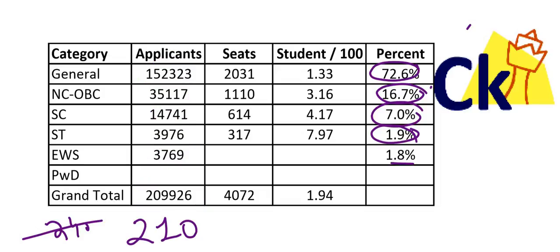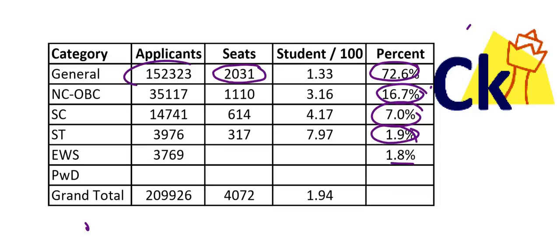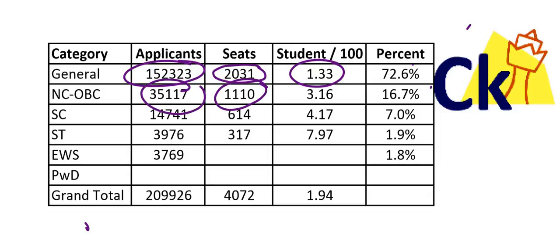This is where the main inequality comes. General category seats are 2,000 for 1,50,000 people, so the conversion ratio or seats per hundred students is only 1.33. OBC has almost 1,100 seats — conversion ratio 3 per hundred, meaning from every hundred people 3 will convert. SC is 4.17, ST is almost 8 — out of every 100, 8 will convert.